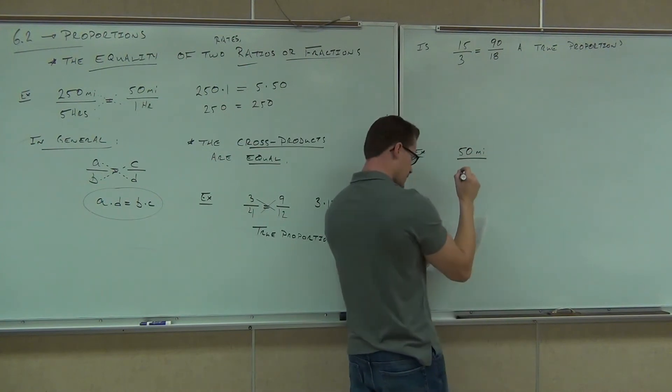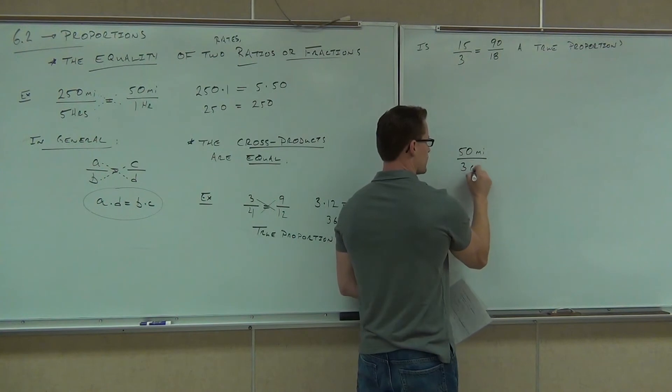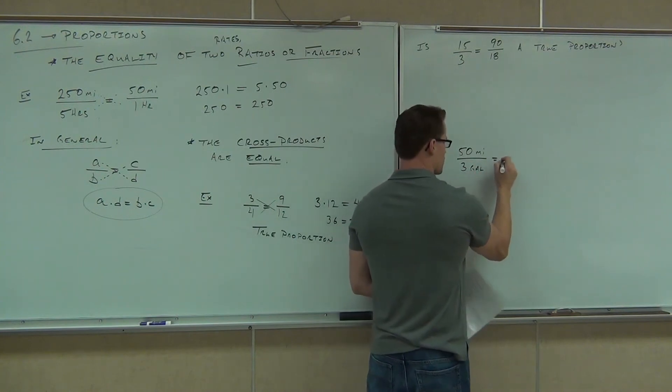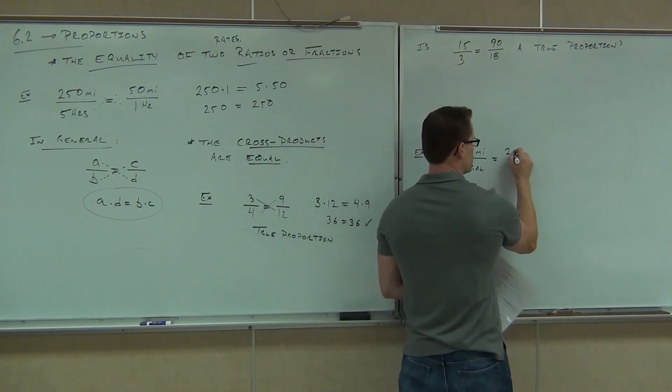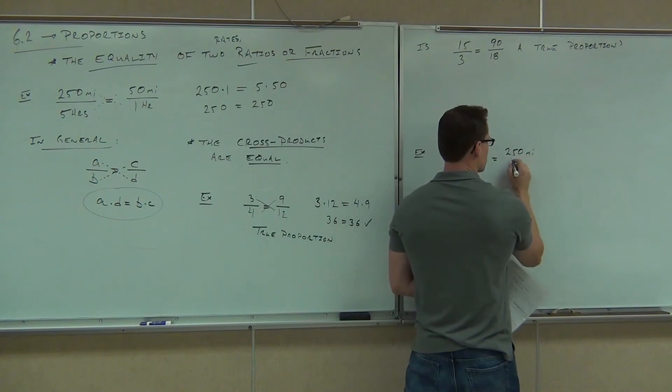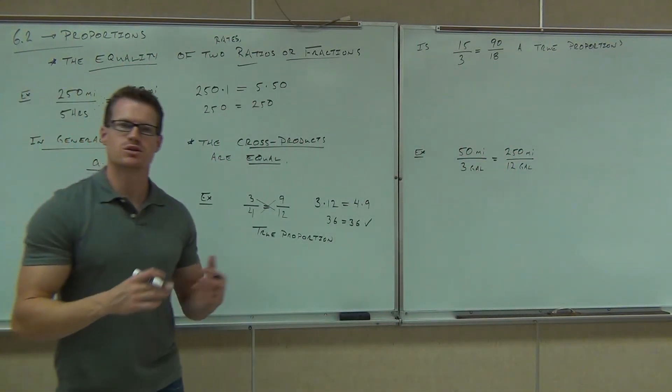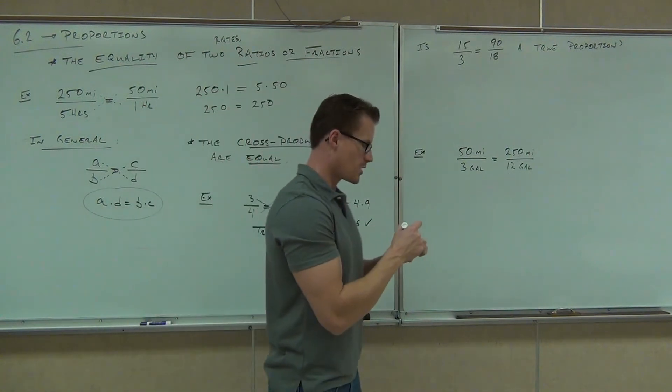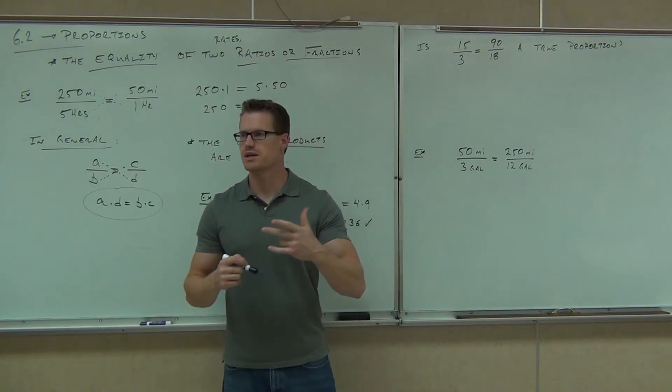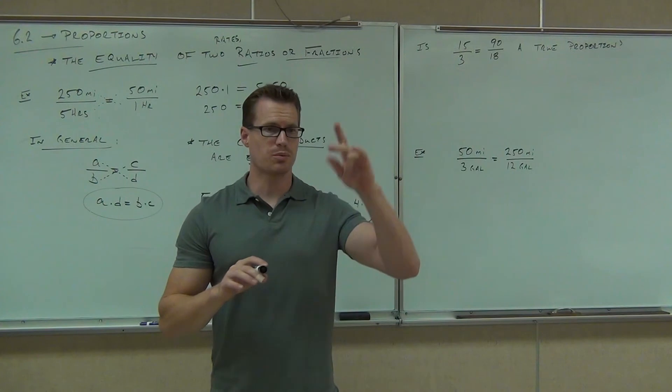And do one for me when you're done with that. Try this one. Is getting 50 miles for every 3 gallons the same as getting 250 miles for every 12 gallons? You can check that with a cross product. So, use the cross product. Again, there are several ways you can do this. But use the cross product to figure out whether these things are actually true proportions.